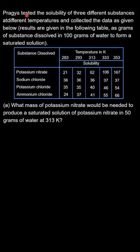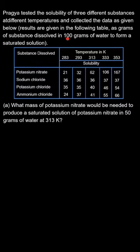The question says Pragya tested the solubility of three different substances at different temperatures and collected the data given in the following table, expressed as grams of substance dissolved in 100 grams of water to form a saturated solution. For example, potassium nitrate requires 20 grams dissolved in 100 grams of water at 283 Kelvin to form a saturated solution.